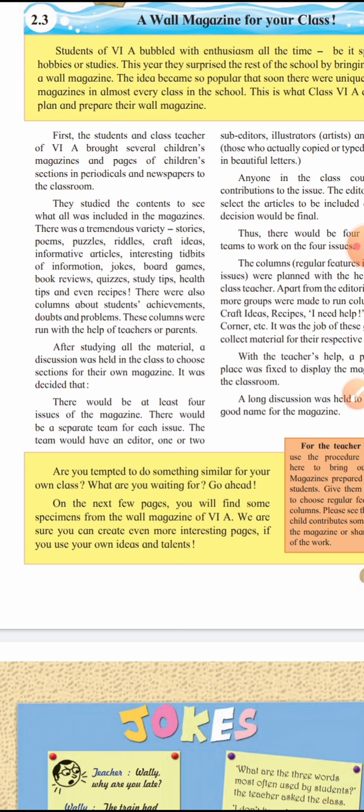After studying all the material, a discussion was held in class to choose sections for their own magazine. It's not that you collect 10–12 magazines and put in every single topic from all of them. From 10–12 magazines or news items collected, we pick only about 3–4 topics for the classroom magazine.